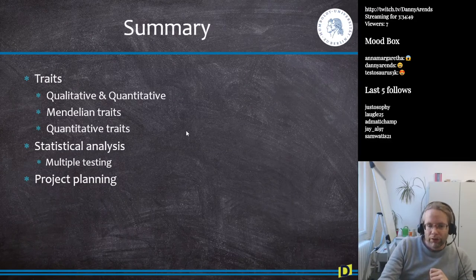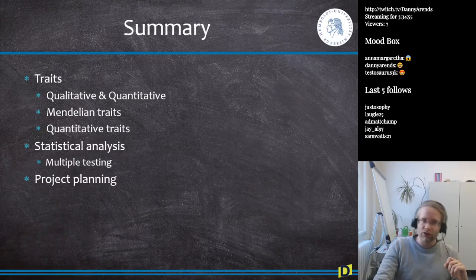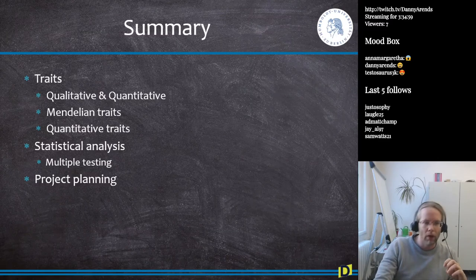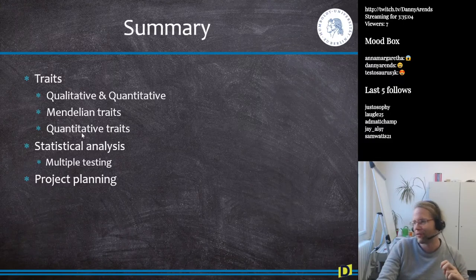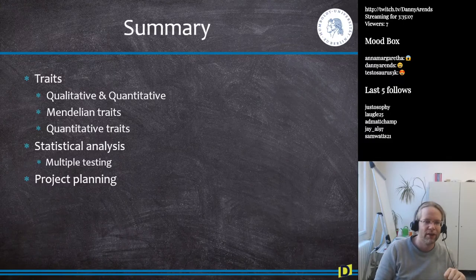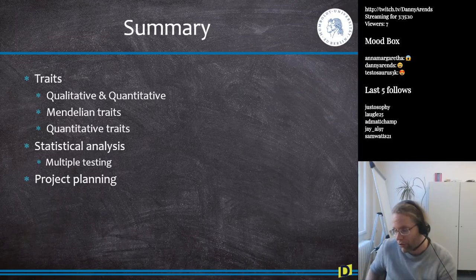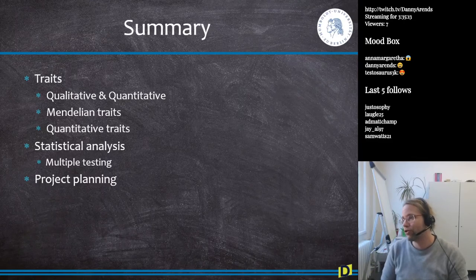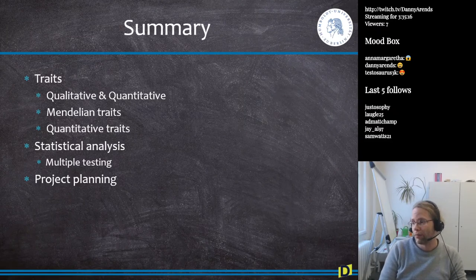Good, so those were all the slides for today. So I talked to you guys first about traits: qualitative, quantitative traits, Mendelian traits. Why is qualitative traits there again? Mendelian trait and complex traits, so the second, the third point should be complex trait. We talked a lot, or I talked a lot about genetics, the origin of genetics. So we talked a little bit about Gregor Mendel, we talked about Thomas Hunt Morgan, his theory of chromosomes which is still used every day today.